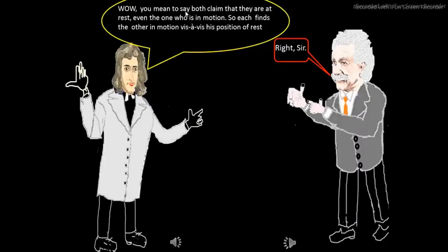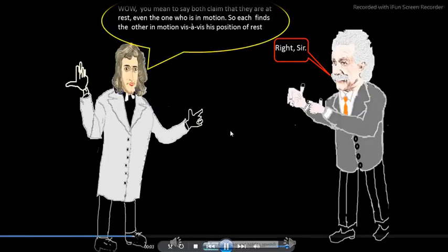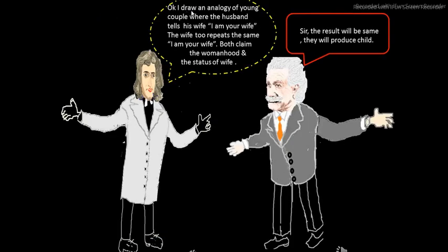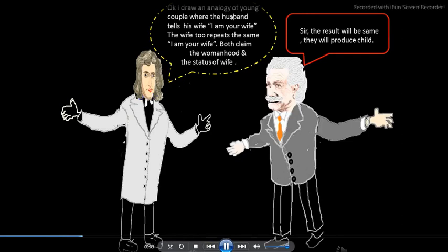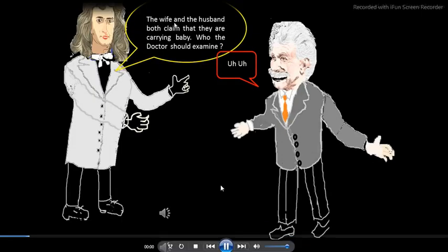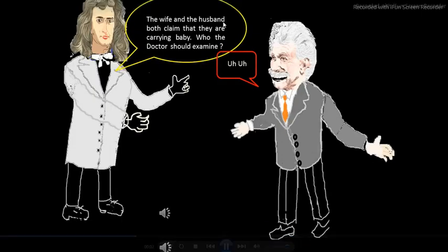How? You mean to say both claim that they are at rest, even the one who is in motion? Each finds the other in motion vis-à-vis his position of rest. I draw an analogy of a young couple where the husband tells his wife, 'I am your wife,' and the wife too repeats the same, 'I am your wife.' Both claim the womanhood and the status of wife. The result will be the same — they will produce a child. Yet both the wife and the husband claim they are carrying the baby. Who should the doctor examine?